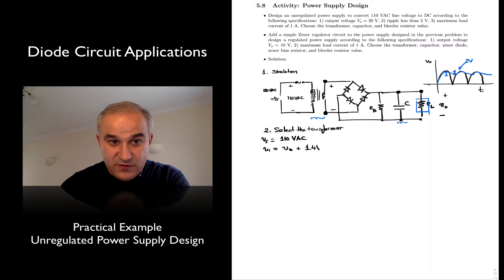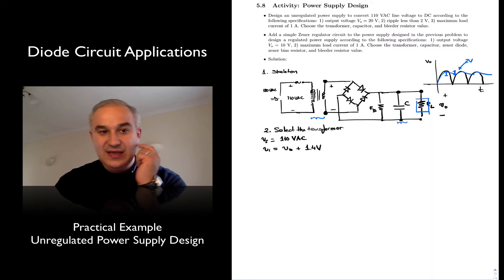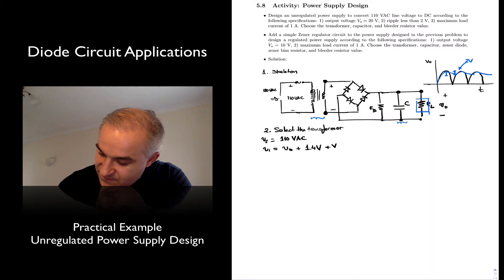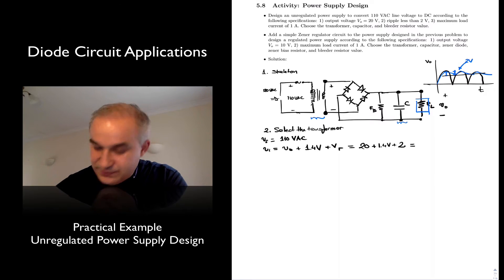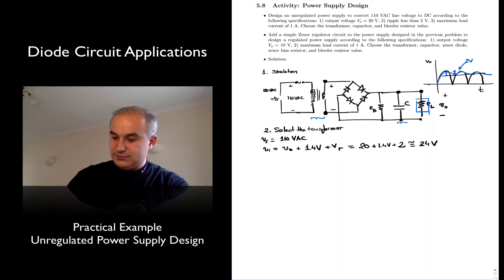And we may want to add the ripple Vr, so we want to make sure that we always, at a very minimum, we are at 20 volts here. So this will be, the output is 20 volts, plus 1.4 volts, plus 2 volts of ripple. So we have here around 24 volts. I just added here, two. Okay?